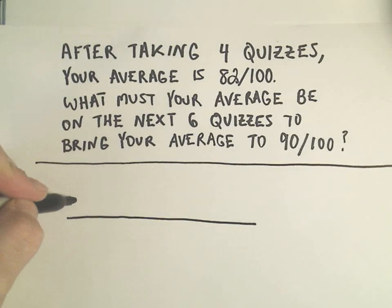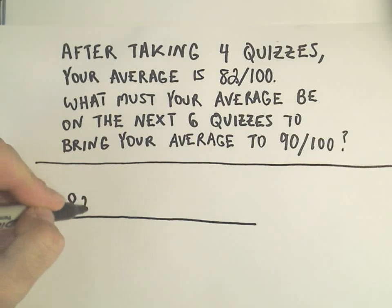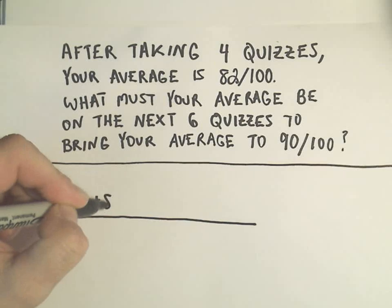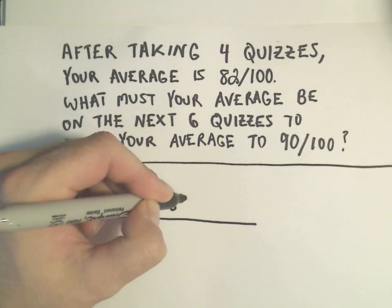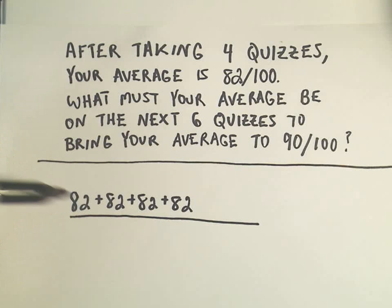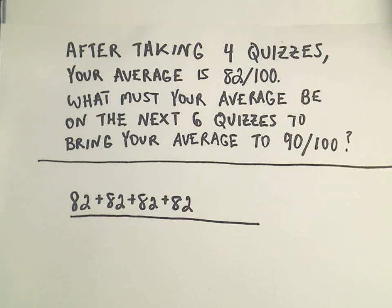So in this case, the way I think about it is, well, you made an 82 on quiz one and an 82 on quiz two and an 82 on quiz three and an 82 on quiz four. So maybe you didn't make an 82 on all those, but your average was an 82. So in a situation like this, you can simply assume that they all are 82s.